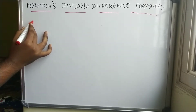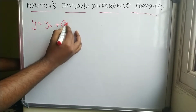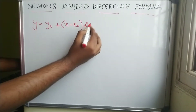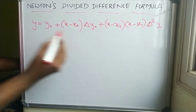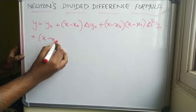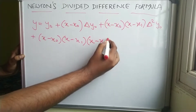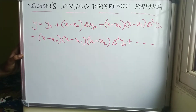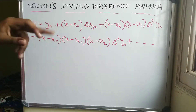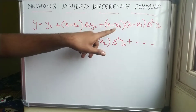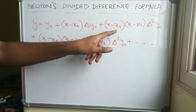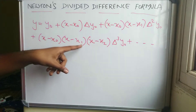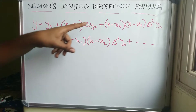The formula is: y = y₀ + (x - x₀)·Δy₀ + (x - x₀)(x - x₁)·Δ²y₀ + (x - x₀)(x - x₁)(x - x₂)·Δ³y₀ + ... To remember this: for Δy₀ you have one term (x - x₀); for Δ²y₀ you have two terms; for Δ³y₀ you have three terms, and so on.